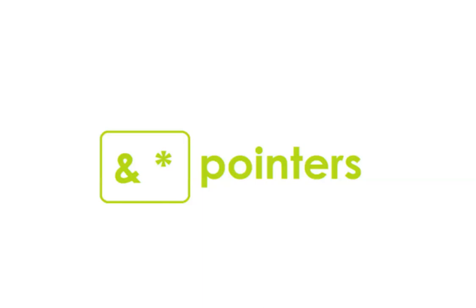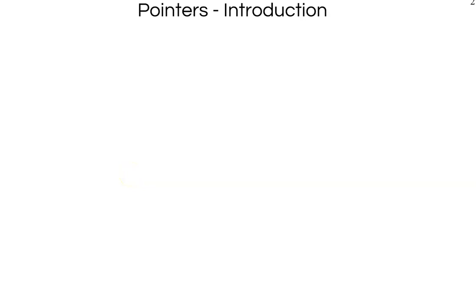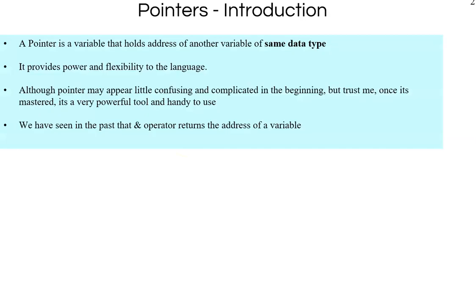Welcome back. In this chapter we will look at pointers. A pointer is one of the primary reasons C is so powerful and is able to execute low-level programming. A pointer is a variable that holds the address of another variable of the same data type. It provides power and flexibility to the language.